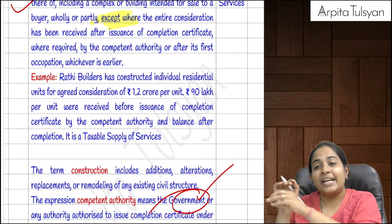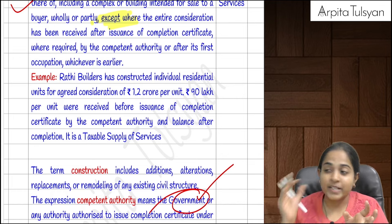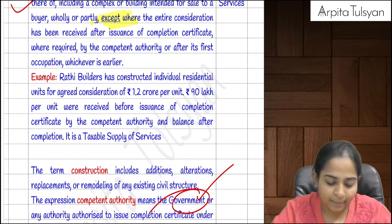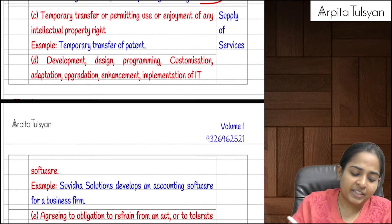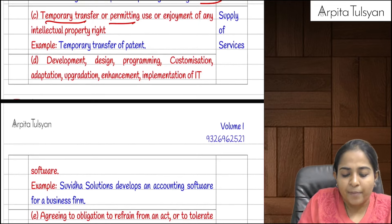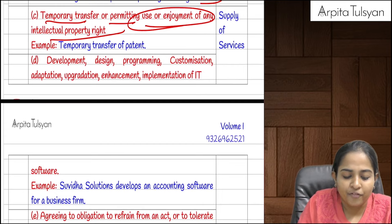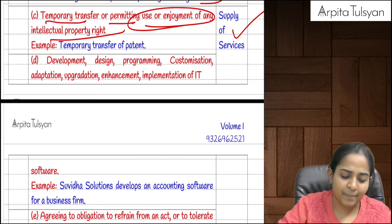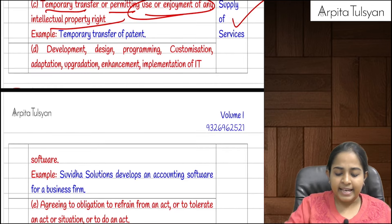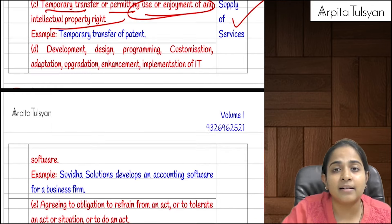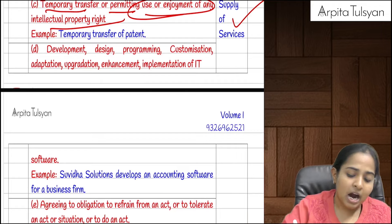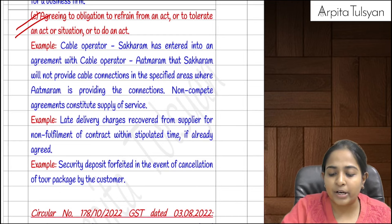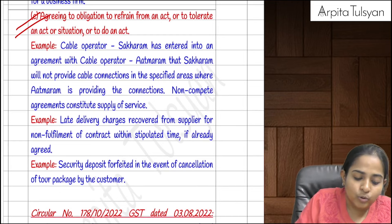If some consideration was received before and some after, or entire consideration was received before the completion certificate, it will be called supply of services and GST will apply. Temporary transfer or permitting use or enjoyment of any intellectual property — e.g., giving my patent to someone else to use — is supply of services. Developing software for someone is also supply of services.